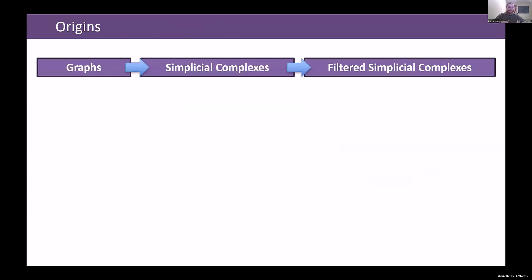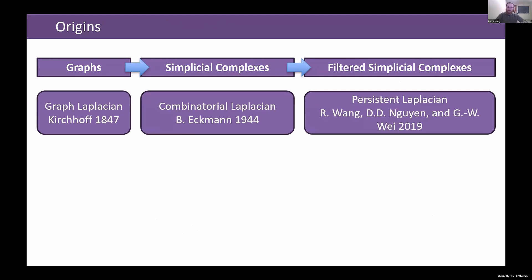And as we do with all things in TDA, we often start with graphs, we produce something in simplicial complexes, and then we produce a filtered simplicial complex version. That is indeed what we do: we take the graph Laplacian, we form the combinatorial Laplacian, which is just for simplicial complexes, and then we filter it to get a persistent Laplacian.